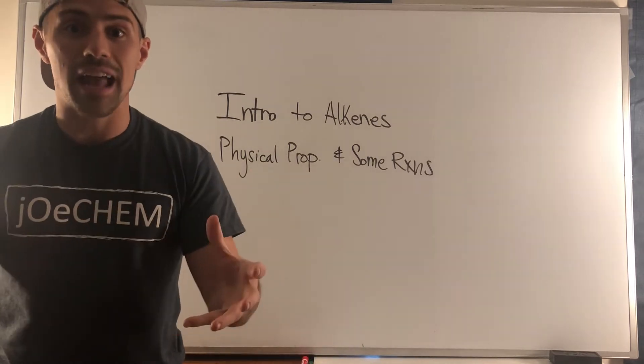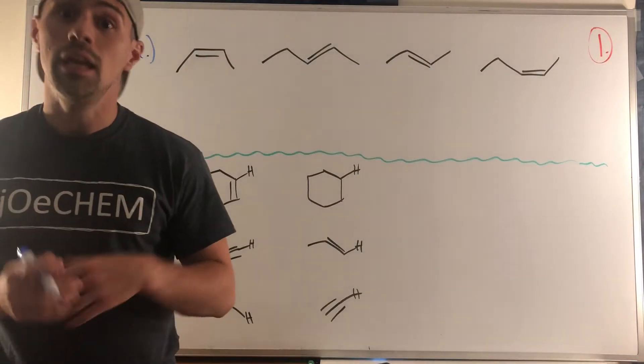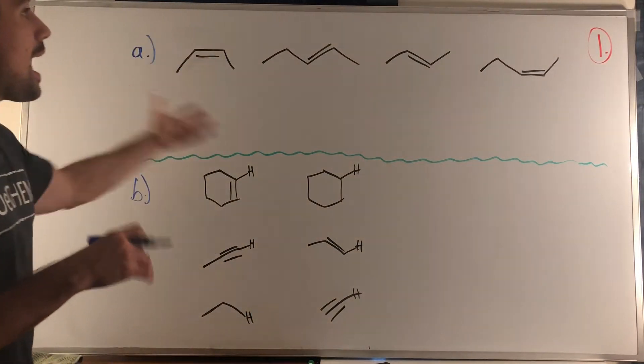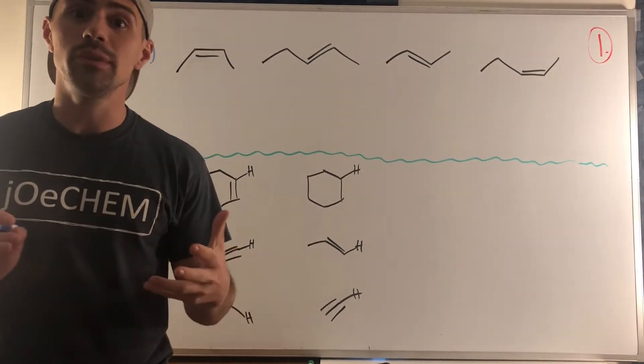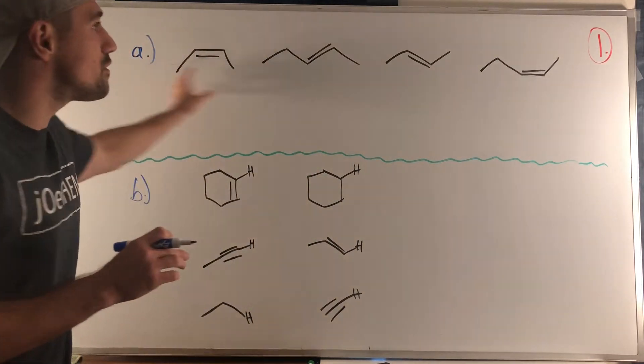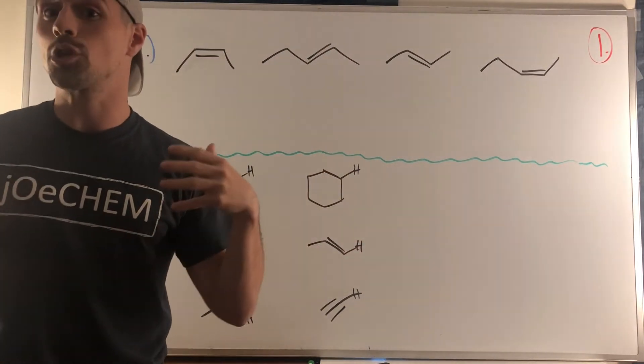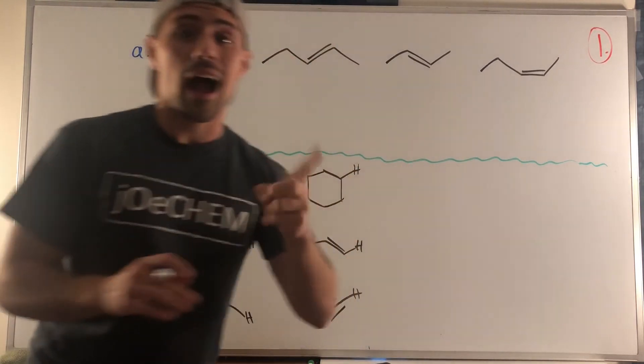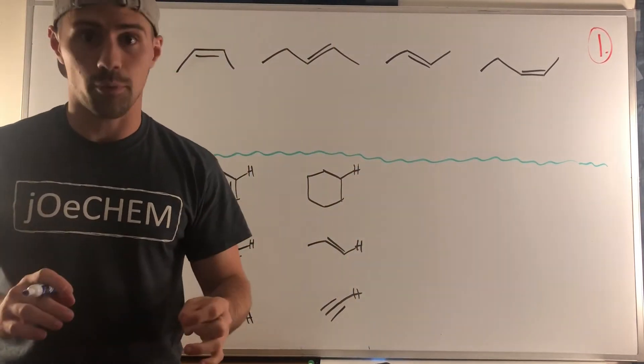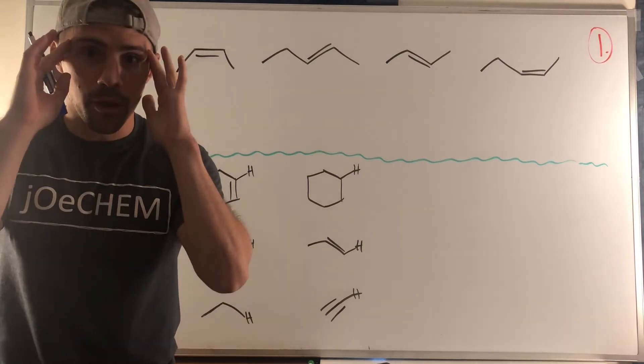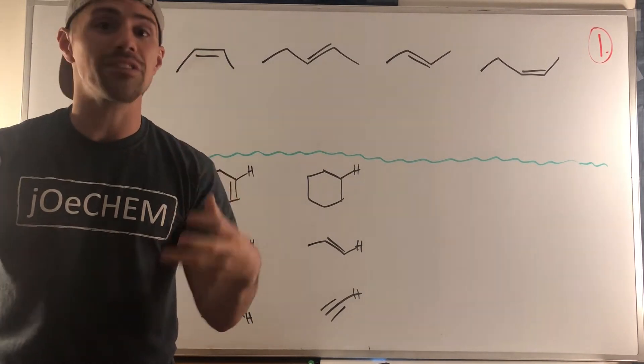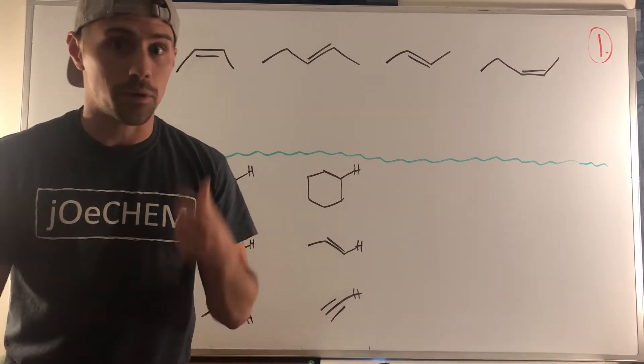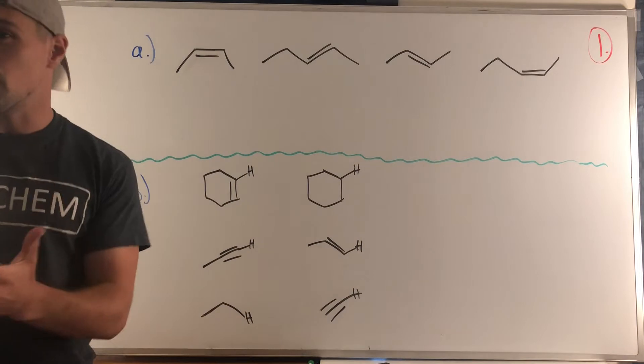In problem one we have letter A and B. If we take a look at letter A, we are tasked with ranking the following four structures from one to four in terms of boiling point. Four being the highest boiling point, one being the lowest. When we think about boiling point, we're thinking about the strength of intermolecular forces—the forces between molecules.